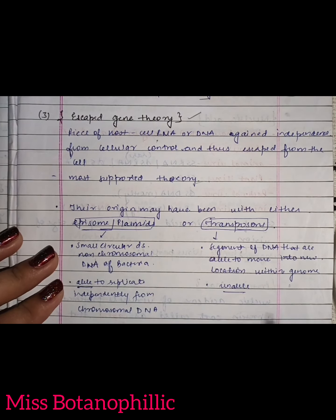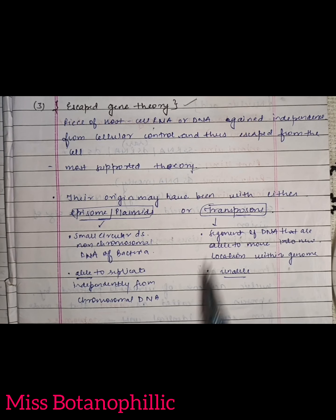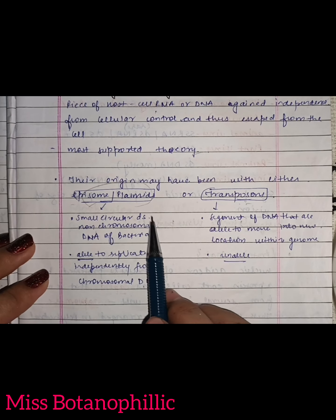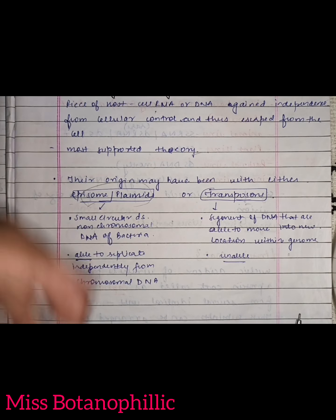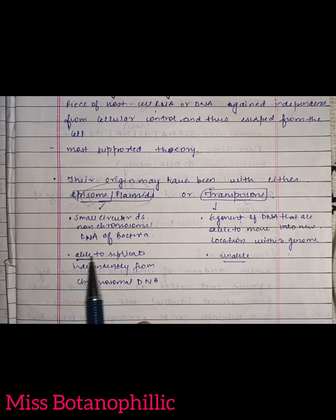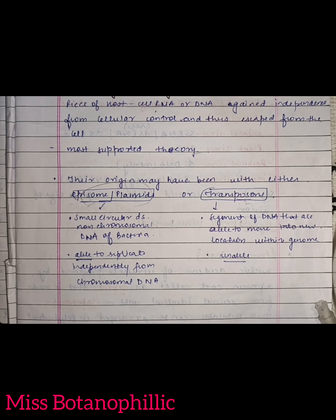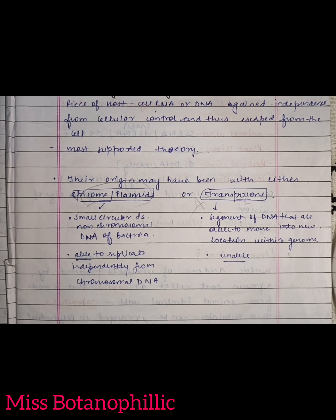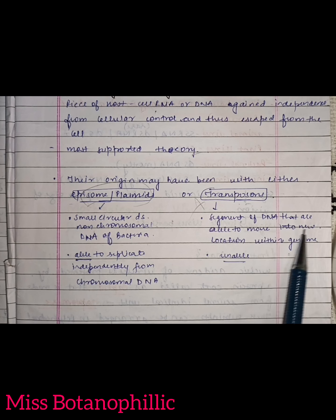In the escape gene theory, there are two important components. First are plasmids — small circular double-stranded non-chromosomal DNA of bacteria — which are extrachromosomal hereditary material of the bacterial cell and are able to replicate independently from chromosomal DNA. Then there are epizomes. Transposons have no capability to be separated from a chromosome independently; replication would be lost if separated from the main DNA. Transposons are segments of DNA that are able to move into new locations within the genome.